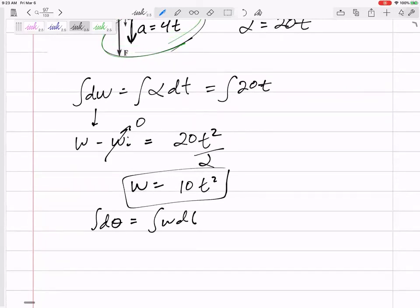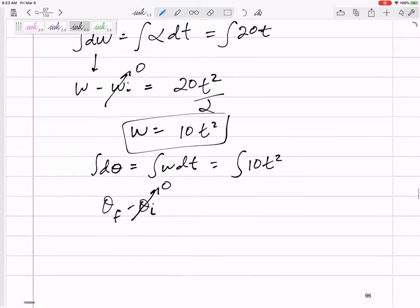And if we want position, we can integrate again. Integral. So what's the integral of 10t squared? And this technically is omega final minus omega, sorry, theta final minus theta initial. Either kind of assume that it starts at some zero position, angular position, or you could call this the change in theta.